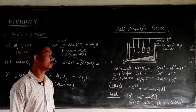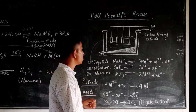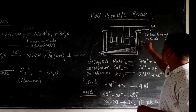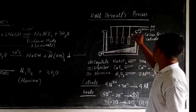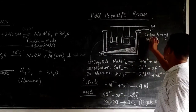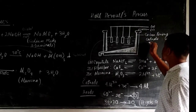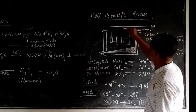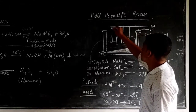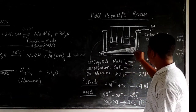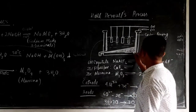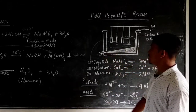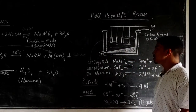The Hall-Héroult process is basically the electrolytic reduction of aluminium oxide to aluminium. This is done in a special electrolytic cell made out of iron. As you can see in the figure, the outer case is made of iron, the inner lining is made of carbon which acts as the cathode, and there is a graphite electrode acting as the anode. The bottom of the tank is inclined so that molten aluminium can easily flow and be collected.